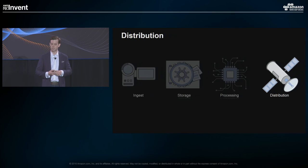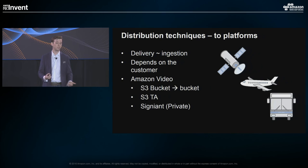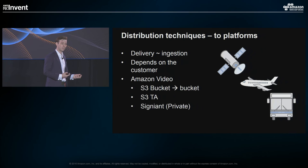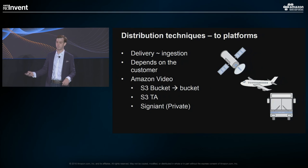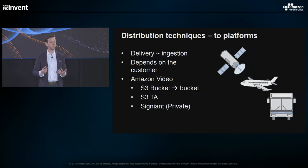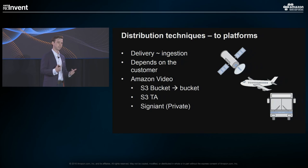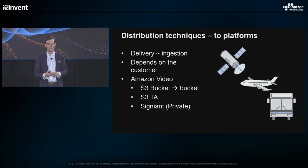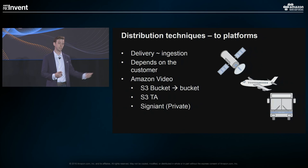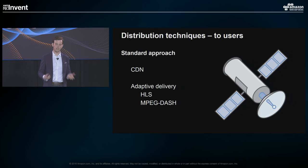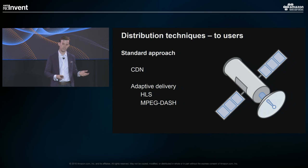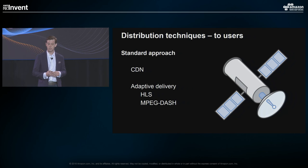Now, finally, I come to the distribution step. From an Amazon Studios point of view, their life is quite easy — they only have one person they need to distribute to, and that's Amazon Video. So in their case, delivery is the same as ingest. They can deliver to Amazon Video through an S3-to-S3 bucket transfer. But it really helps to be permissive in what you can do — be accepting, and always realize that your partners and upstream are the ones actually calling the shots. So be flexible: use Aspera, use S3TA, and so on. You can reuse a lot of the investment you made in your digital asset management system for ingest to deliver to third parties. For distribution to users, the standard approach is have a CDN, use your adaptive delivery methods, have HLS, have MPEG-DASH. Very similar to what you had in HD.